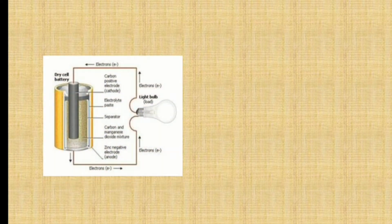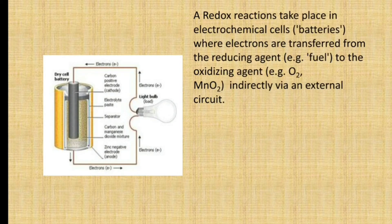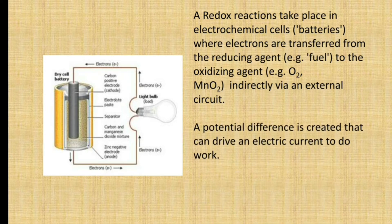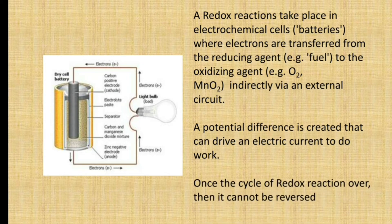This is the internal structure of a primary battery, which cannot be recharged. In a primary cell, a redox reaction takes place in the electrochemical cell where electrons are transferred from the reducing agent to the oxidizing agent indirectly via an external circuit. Oxidation means loss of electrons and reduction means gain of electrons. A potential difference is created that can drive an electric current to do work.